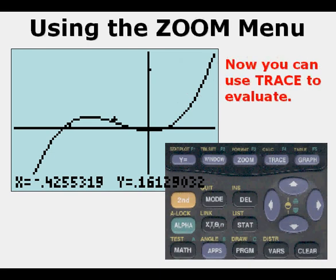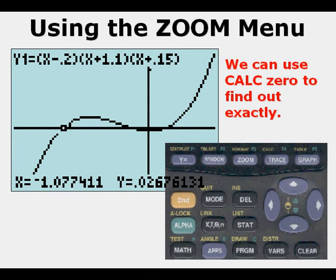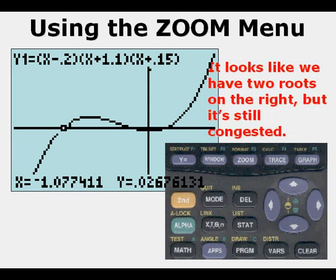And from here, we can go to trace to evaluate. And if we go over to the far left root, we can see that the left root is about negative 1.1. But we still have over on the right, we really can't see it. It looks like it has two roots on the right, but it's very congested.